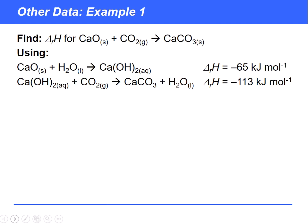Now we want to extend things to look not just at enthalpies of combustion or formation, but what happens if we have any other enthalpy changes. It turns out that as long as we can create a closed cycle where we've got two routes between the same reactants and products, we can actually use any enthalpy changes we like in order to form a Hess cycle and hence calculate enthalpy changes indirectly.